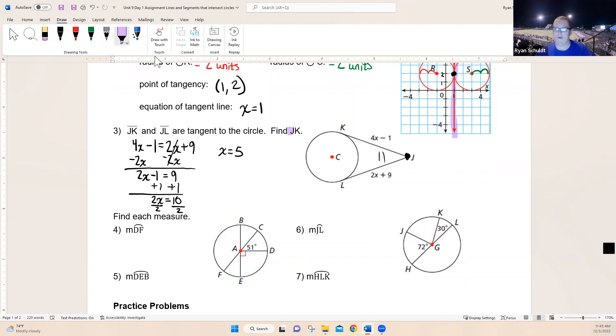No, they want us to find JK, so we have to plug back in. JK is right here: four times five minus one, that's just nineteen. Now we're done with that one.